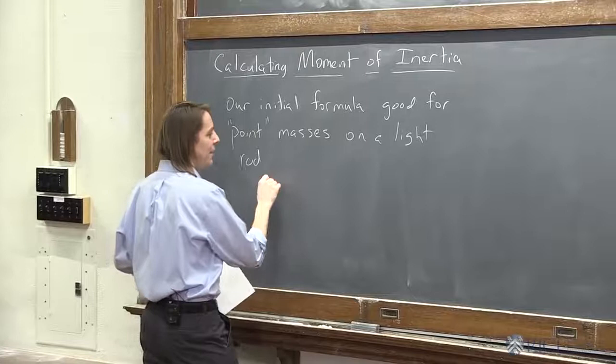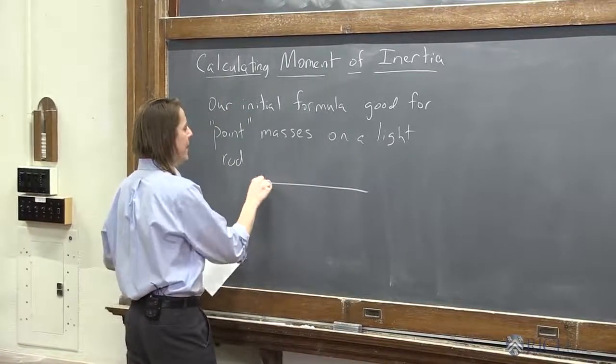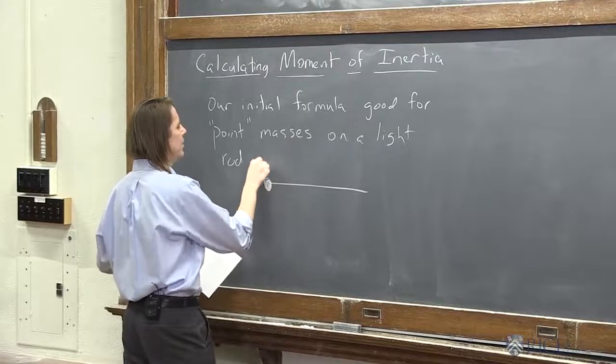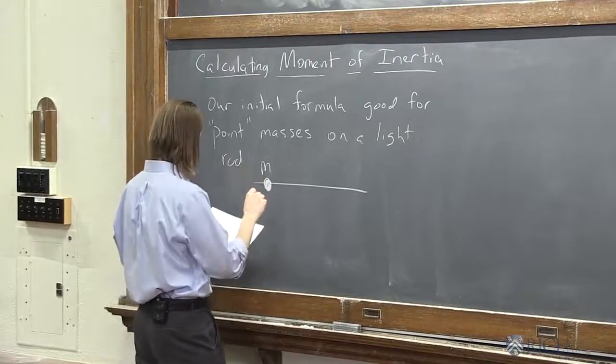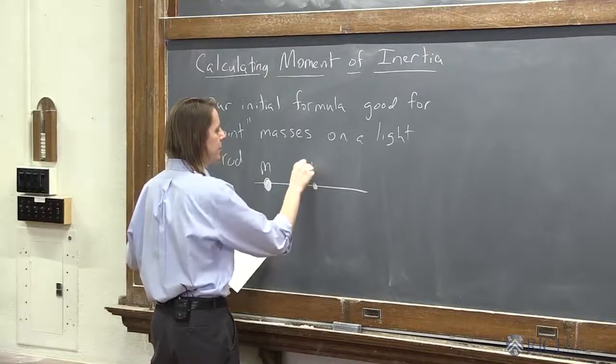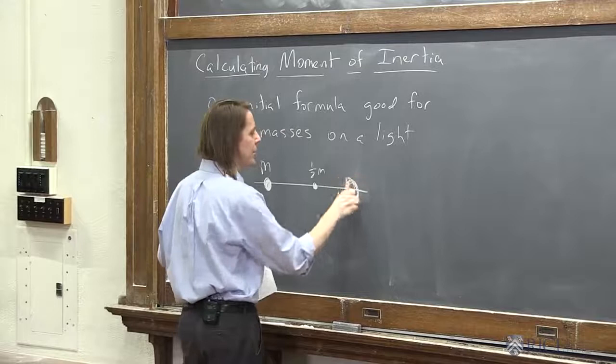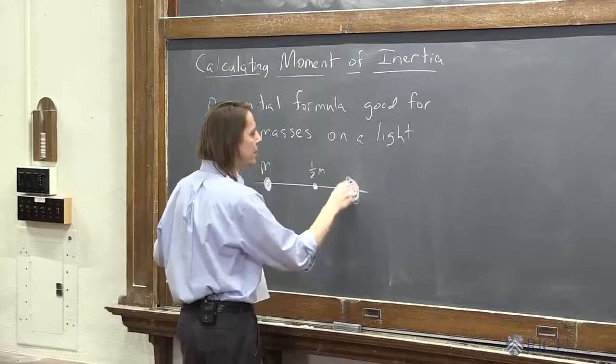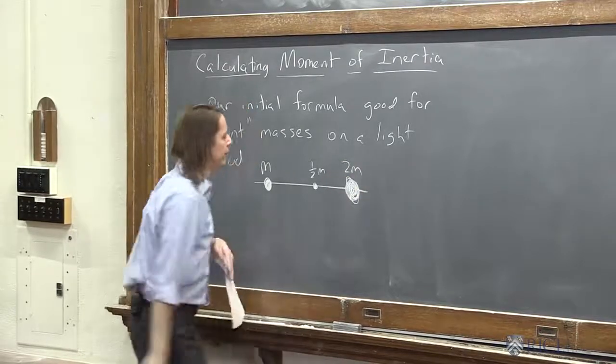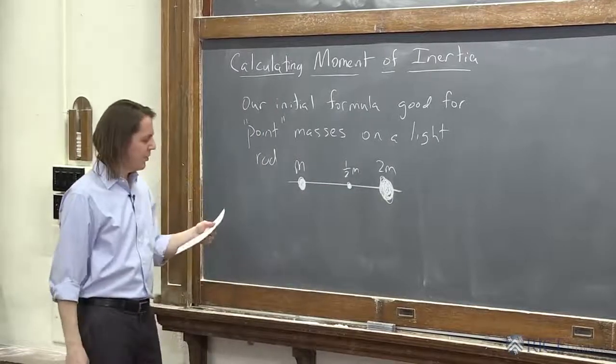So for example, say you happen to have a light rod like that and you've got a mass m attached to it here, and then a mass half m attached to it here, and then a real big mass, 2m, attached here. So maybe 1 kilogram, half a kilogram, 2 kilograms, some ratios like that.